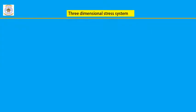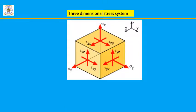Next: three-dimensional stress system. In any two-dimensional stress system there will be two mutually perpendicular directions and three stresses — two normal stresses and one shear stress. In any three-dimensional stress system we can find three mutually perpendicular directions and nine stresses: three normal stresses and six shear stresses.